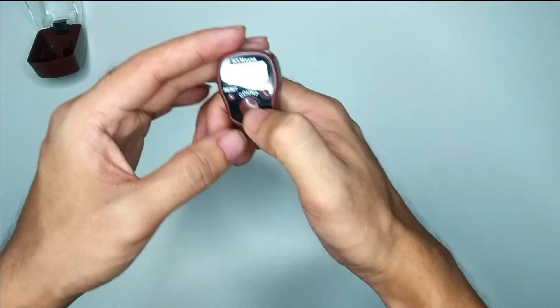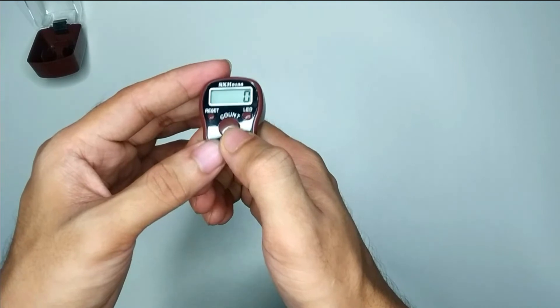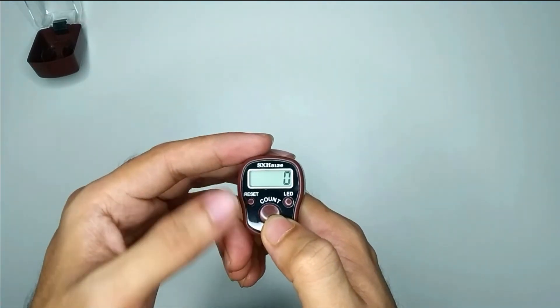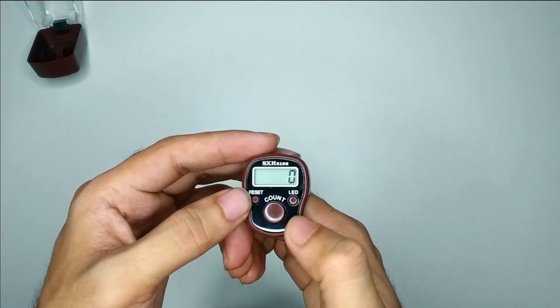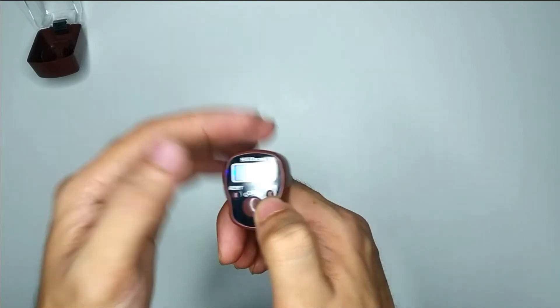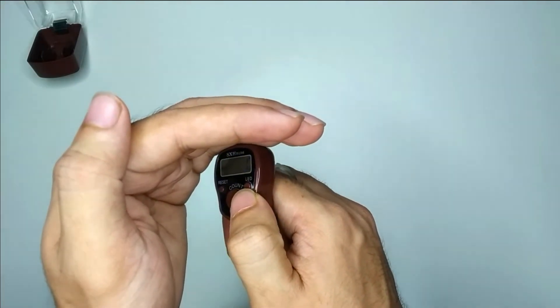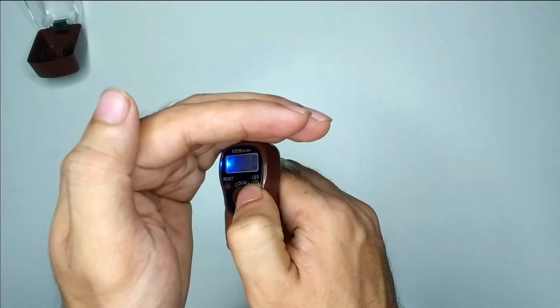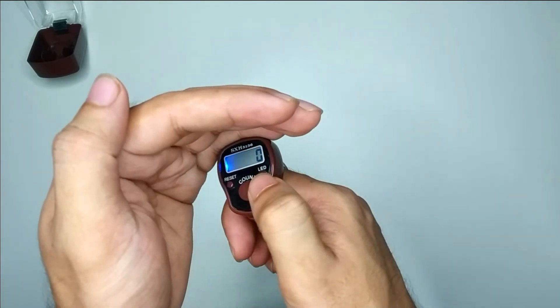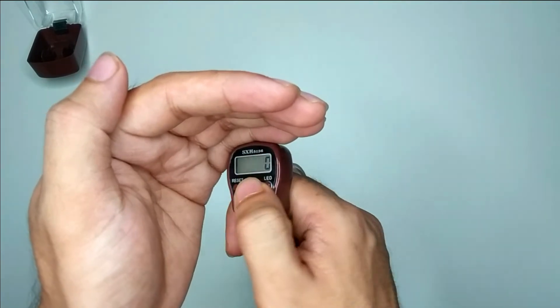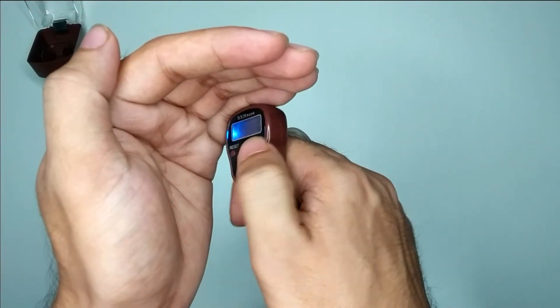Now you can see the reset, counter, and LED buttons. LED is for light. You can use it at night. If you use this counter at night, you can press this LED option.